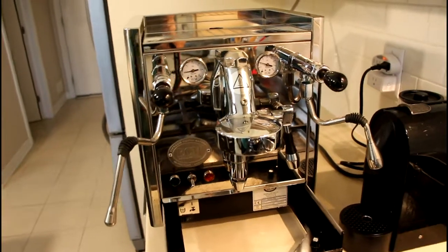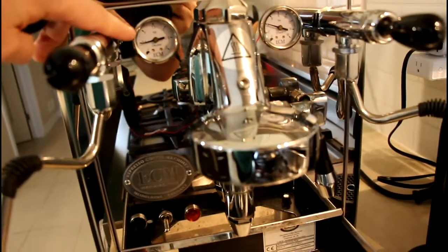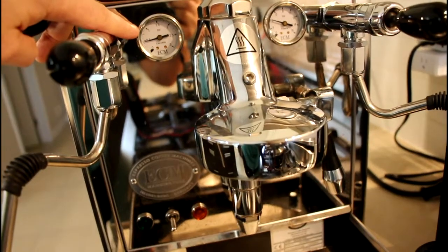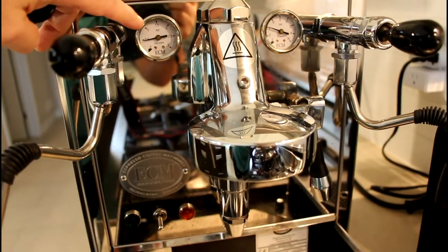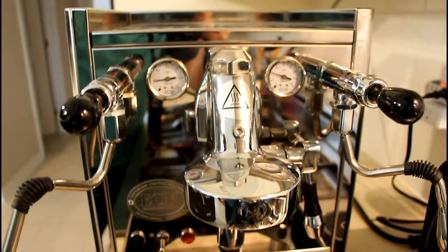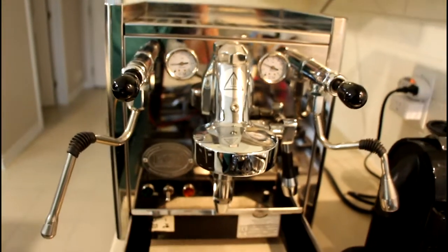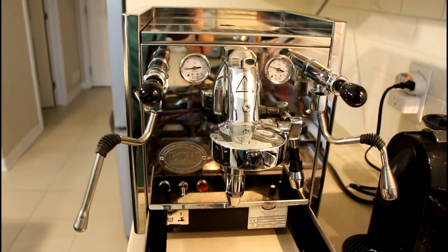I have a problem with my ECM. The pressure gauge is showing 0.7, 0.8 and it should be around 1.2, 1.3. So I'm going to disassemble my espresso machine and fix the issue.